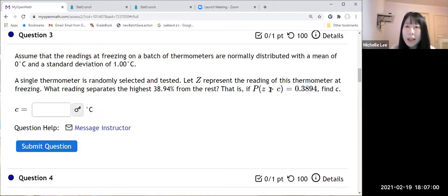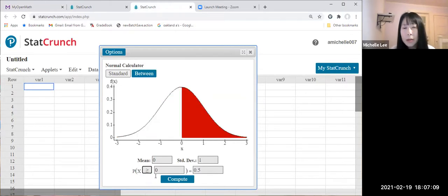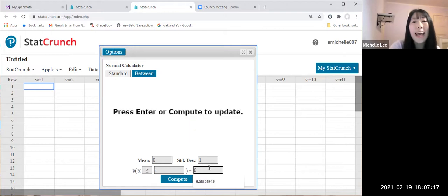So probability is 0.3894. Then I'm gonna change the inequality symbol here. So greater or equal to. It really does not matter in this StatCrunch. And 0.3894. Let's compute.